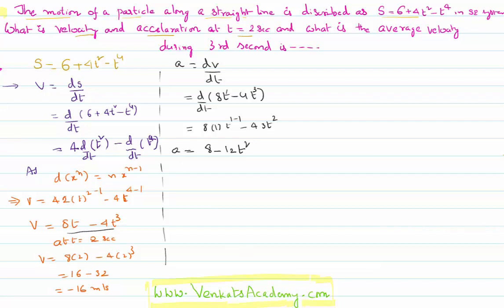Now suppose you want acceleration at t = 2 seconds. Substituting t = 2: a = 8 − 12×(2²) = 8 − 12×4 = 8 − 48 = −40 meters per second squared. So the acceleration is −40 m/s², which tells you that the body is decelerating.